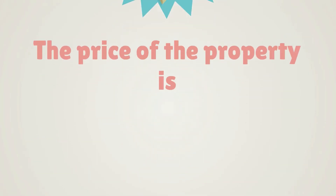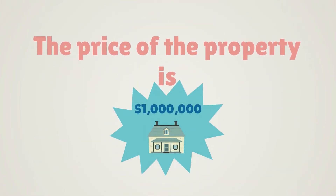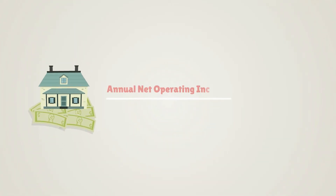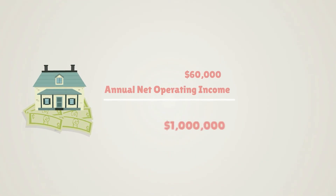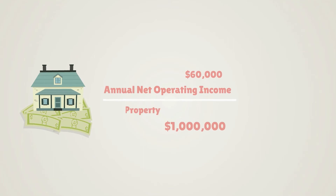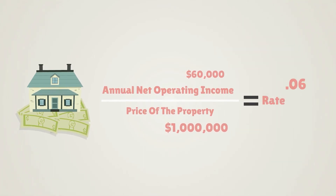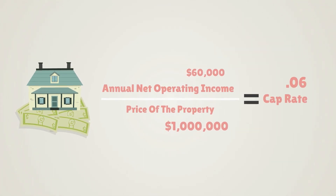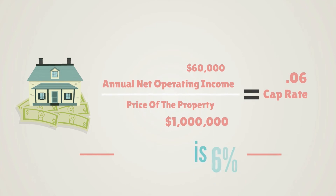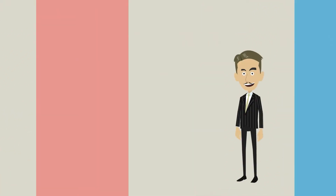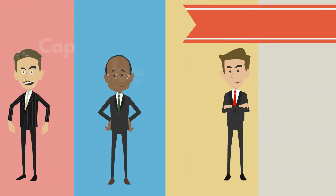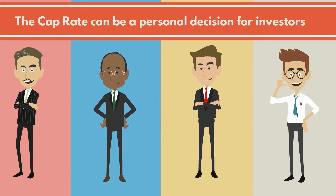For example, if the annual NOI of a property is $60,000 and the price of the property is $1,000,000, the math would look like this: the annual net operating income of $60,000 divided by the $1,000,000 price of the property equals a cap rate of 0.06 — so the cap rate is 6 percent.